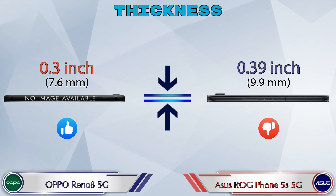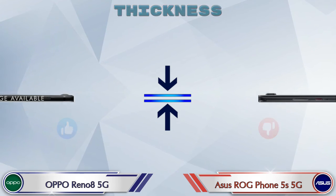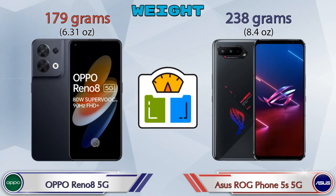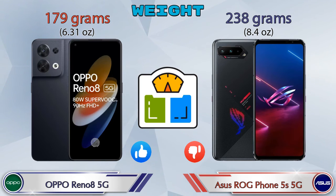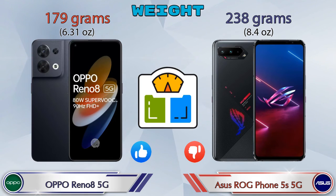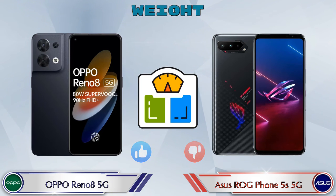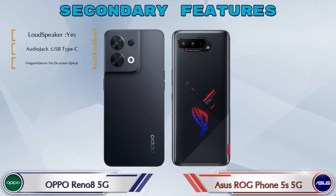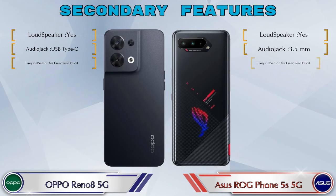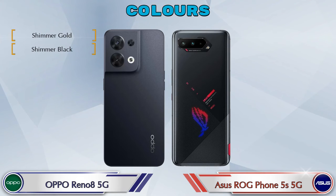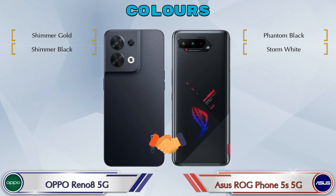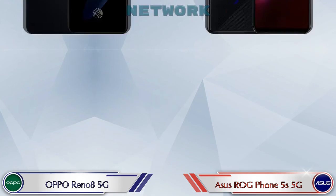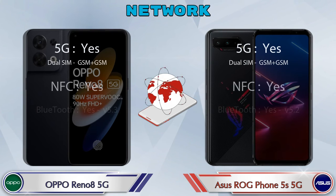Weight: the Reno 8 5G is 179 grams and the ROG Phone 5S 5G is 238 grams, which is heavier than the Reno 8 5G. There are two color options available in both phones. This is the detail about network, Bluetooth, GPS, and Wi-Fi.